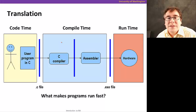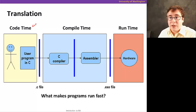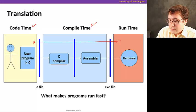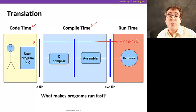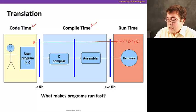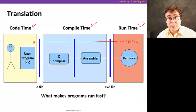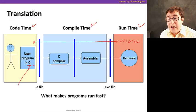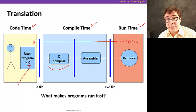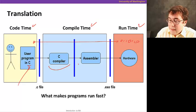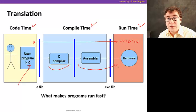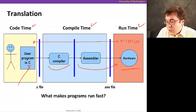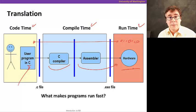We saw this picture in the very first section. The lifetime of a program starts with coding time when you write the code, compile time when you translate from the high-level language all the way down to machine code — the zeros and ones the computer understands — and then runtime, when you're actually executing the program. What makes programs fast is your algorithm, how you write your code, and what the compiler does.